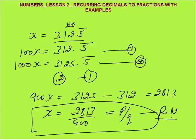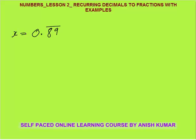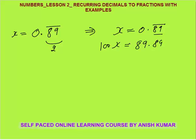Another example: x equals 0.89 bar, meaning 8, 9, 8, 9... till infinity. In this case, there are no non-repeating digits, so Step 1 is skipped. Only Step 2 applies. We have two repeating digits; shift both to the left of decimal by multiplying by 100. So 100x equals 89.89 bar. Subtracting x: 99x equals 89, so x equals 89 by 99.